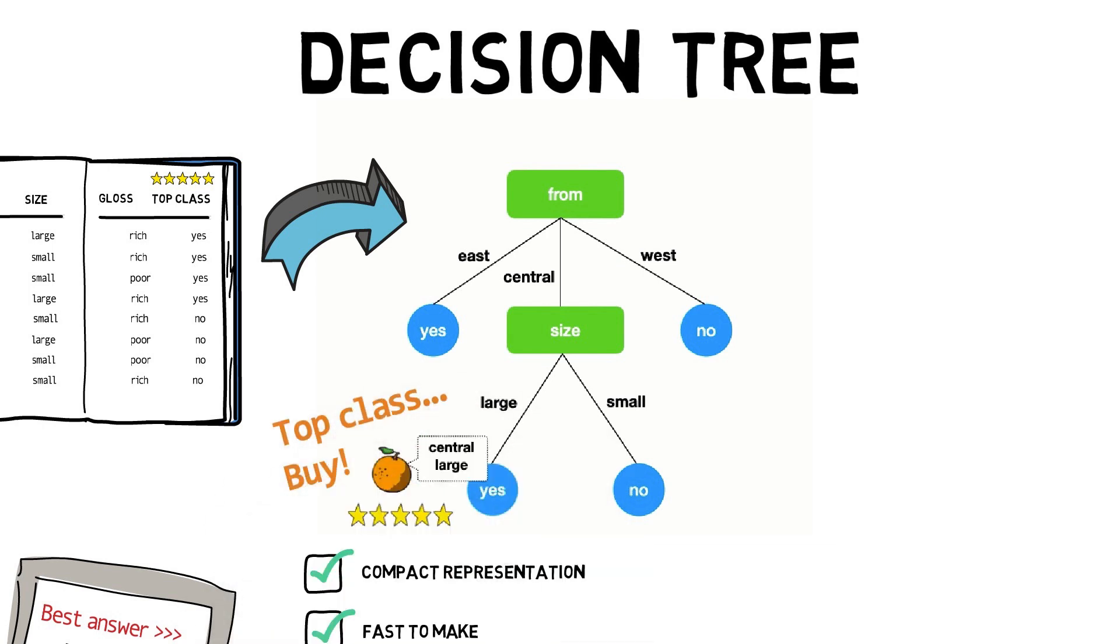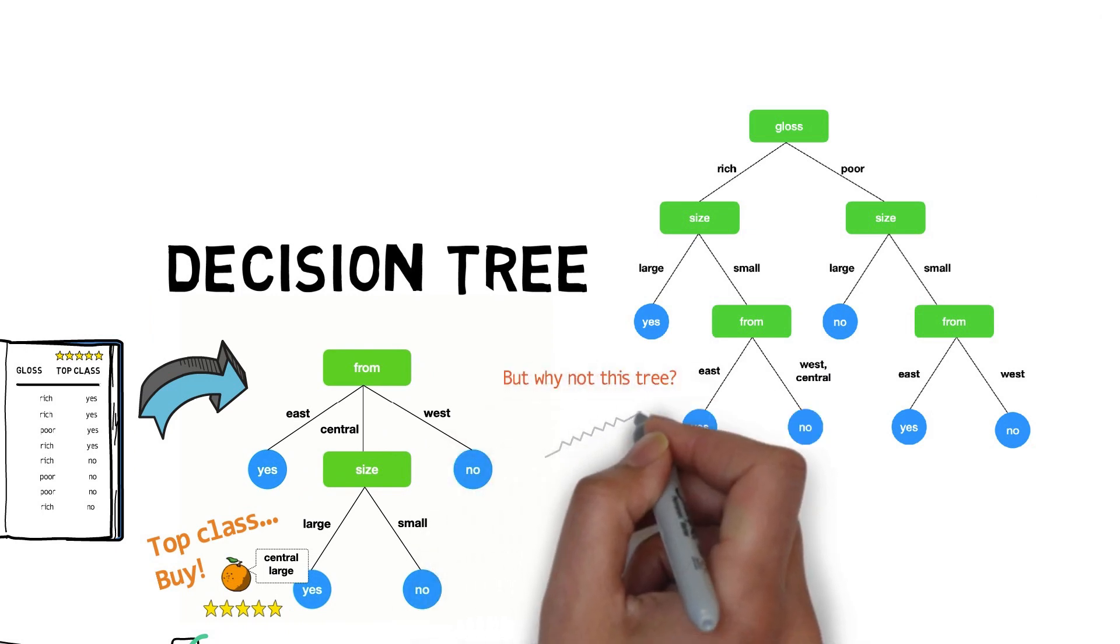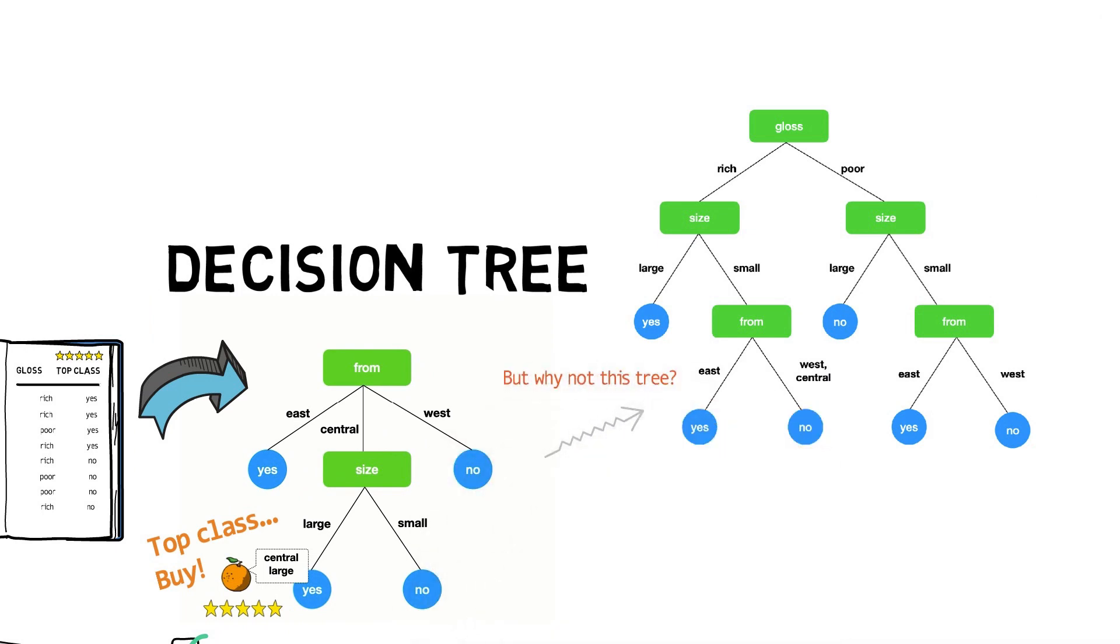But what makes one tree good compared to the other possible trees? Our example can also be represented like this, or like this.